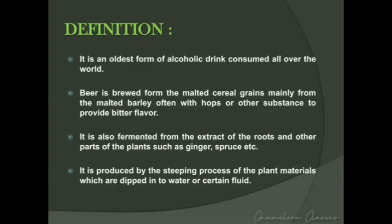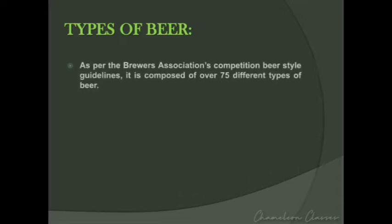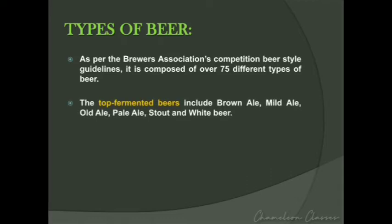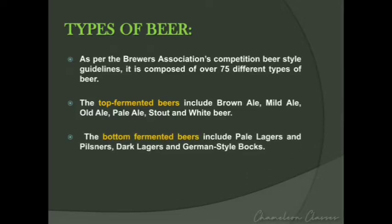The steeping process is done to extract flavor and soften the beer. As per the Brewers Association's competition beer style guidelines, there are over 75 different types of beer. Some of the main types are top-fermented beers, where the yeast rises to the surface of the fermenting vessel, producing more flavors. Top-fermented beers include brown ale, mild ale, old ale, pale ale, stout, and white beer.